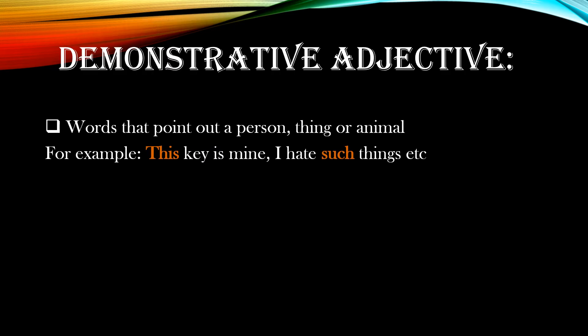Demonstrative adjective — these are the words that point out things, persons, or animals. Note the word 'point' here. For instance, 'this key is mine' — the word this is used to point out the key, which is a noun. Another example: 'I hate such things' — the word such is used to point out things. Words like such, this, that, and those, when used before nouns, come under the umbrella of demonstrative adjective.